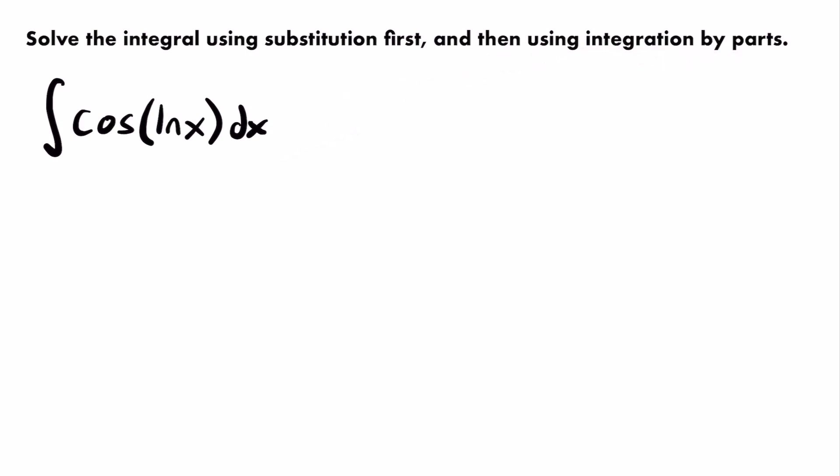If we're going to use u-substitution as the first step, what should we set equal to u? Typically when we use u-substitution, we use it to solve an integral involving a composite function — a function within another function. Here we have the natural log of x inside the cosine function. Typically we set the inside function equal to u.